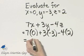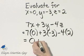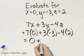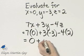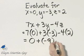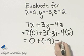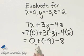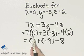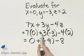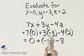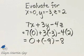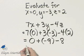7 times 0 is 0, plus 3 times negative 3 — that product is negative 9 — minus 4 times 2, which is 8. Why do we multiply first? Because multiplication is higher in order of operations than addition or subtraction.